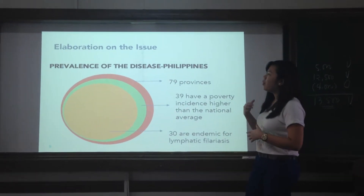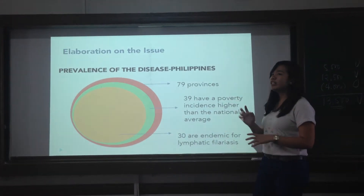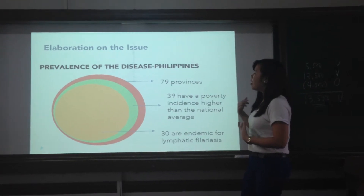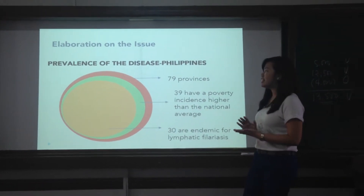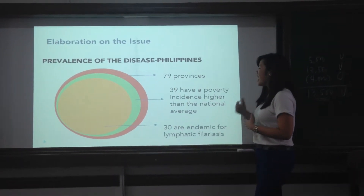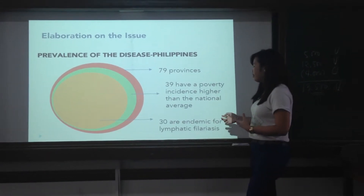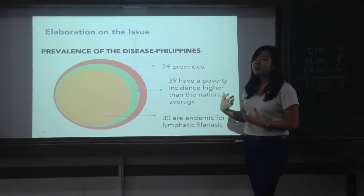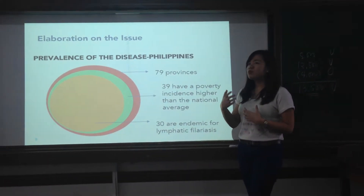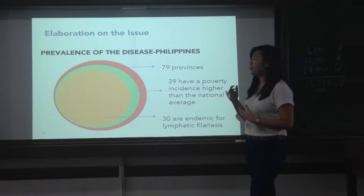Now let us discuss the prevalence of the disease specifically in the Philippines. According to Senate Bill 1063, as introduced by Senator Diko Lakin, there are 79 provinces in the Philippines and 39 have a poverty incidence higher than the national average. Of these 39 provinces, 30 are endemic for lymphatic filariasis. We can infer that most of the provinces that are endemic are those below the poverty line.